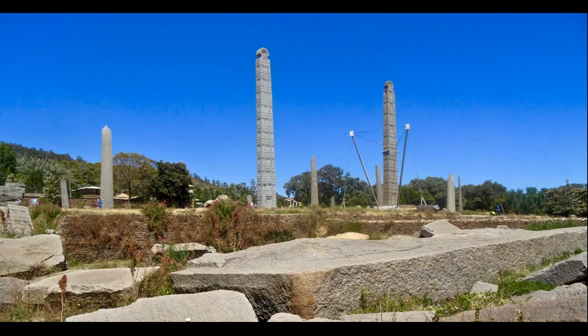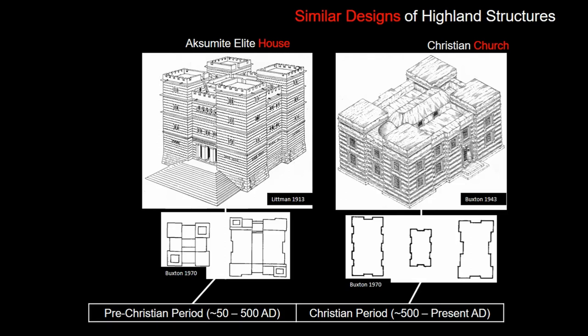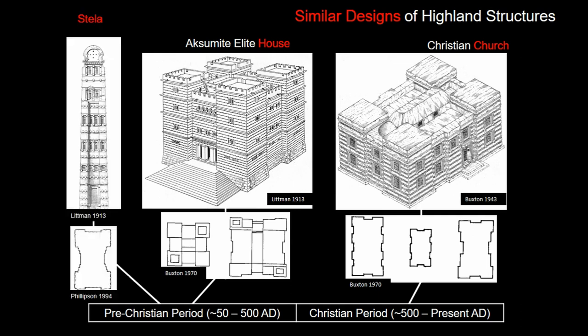Symbols of the pre-Christian religious traditions remain today in the form of the Aksumite stelae — large funerary monuments carved from granite. There are hundreds of these stelae, but the most famous are the six largest, carved to look like multi-storied houses or palaces. In Buxton's argument, the similarity in design between Aksumite elite houses and later Christian churches suggests a connection. I would also add the Aksumite stelae, whose elite forms also incorporate house symbolism in their design. Now we're not just comparing a domestic to a ritual building of two eras, but two ritual buildings where we see many of the same functions — trying to understand why the use of domestic symbolism on ritual buildings is important.